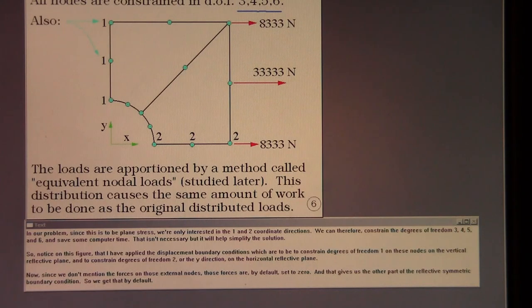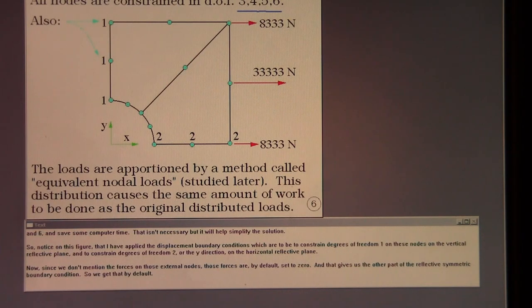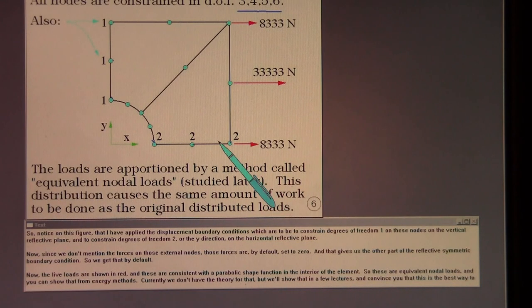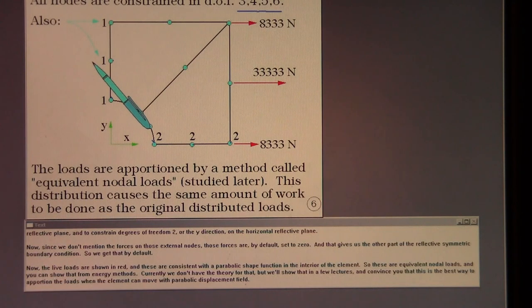So notice on this figure that I've applied the displacement boundary conditions, which are to constrain degrees of freedom one on these nodes on the vertical reflective plane and to constrain degrees of freedom two, or the y direction, on the horizontal reflective plane. Now since we don't mention the forces on those external nodes, those forces are by default set to zero, and that gives us the other part of the reflective symmetric boundary condition. So we get that by default.